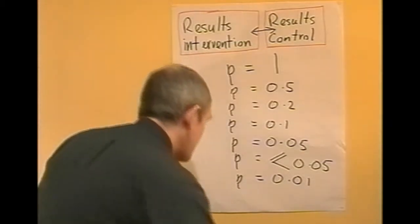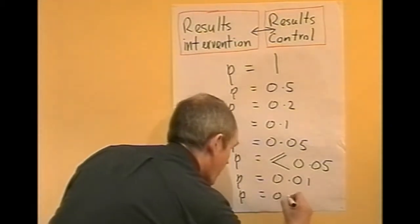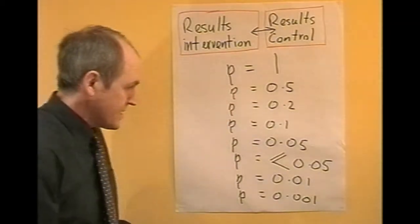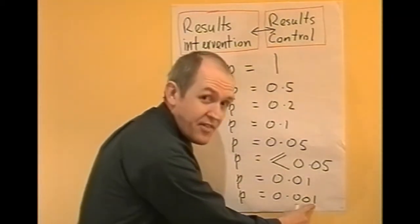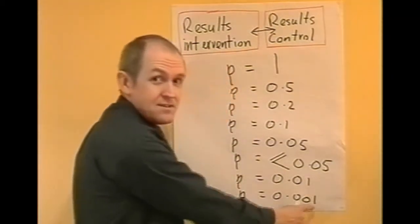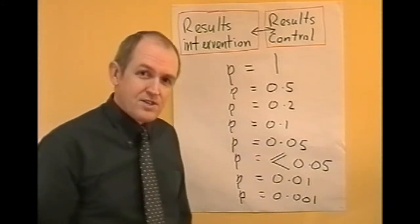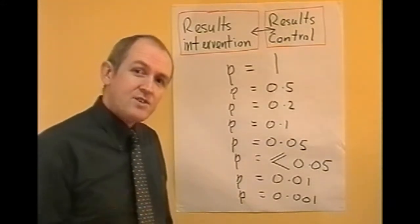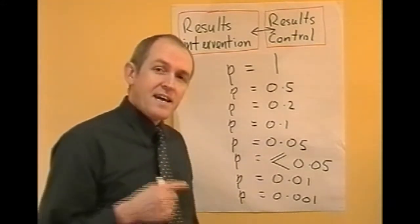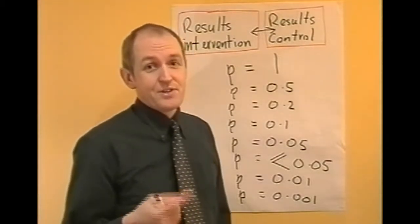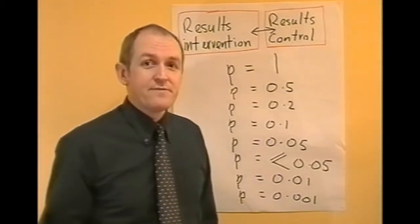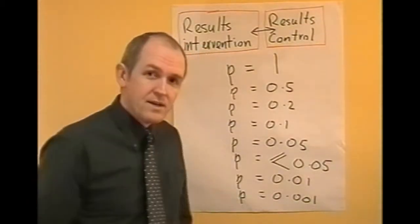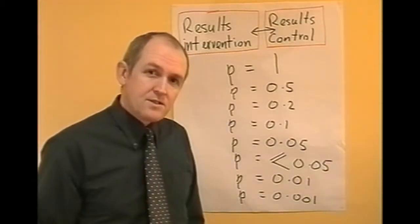Suppose p equals 0.001. There's only one chance in 1,000 that the result arose by chance, and the researcher is 999 out of 1,000 sure that there is a genuine difference between the two groups. Of course, the p-value could go on getting smaller.